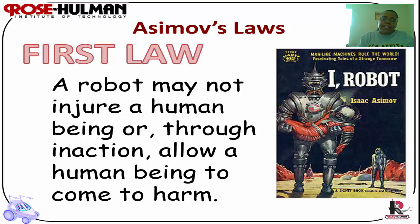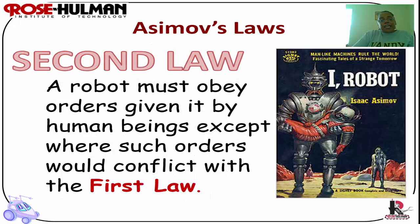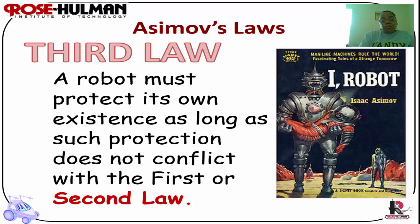Around 1942, Isaac Asimov wrote science fiction, including a short story called The Runaround, which featured iRobot and established the three laws of robotics, which are still used today. The first law: a robot may not injure a human being or through inaction allow a human being to come to harm. The second law: a robot must obey orders given by human beings, except where such orders conflict with the first law. The third law: a robot must protect its own existence as long as it does not conflict with the first or second law.